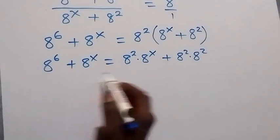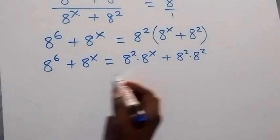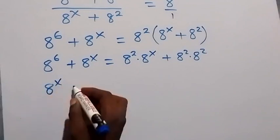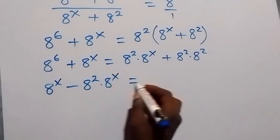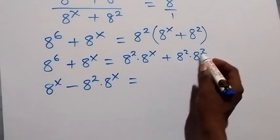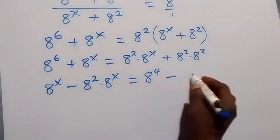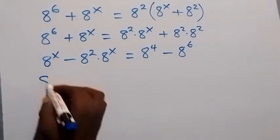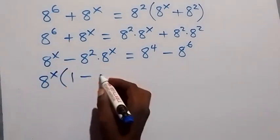From here, let's collect the terms with x to one side. We can take this to this side, then take 8 raised to the power 6 to that side. So here, we only have 8 raised to the power x, then minus 8 squared times 8 raised to the power x, which is equal to, on this side, 8 raised to the power 2 plus 2, which is 8 raised to the power 4. Then, we can factor 8 raised to the power x out, and this will remain 1 here, then minus 8 squared left here.